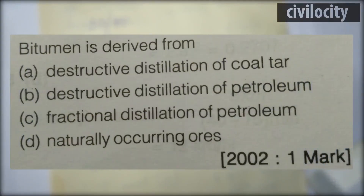This question says: 'Bitumen is derived from — A: destructive distillation of coal, B: destructive distillation of petroleum, C: fractional distillation of petroleum, or D: naturally occurring ores.' You know the answer — it is C: fractional distillation of petroleum.